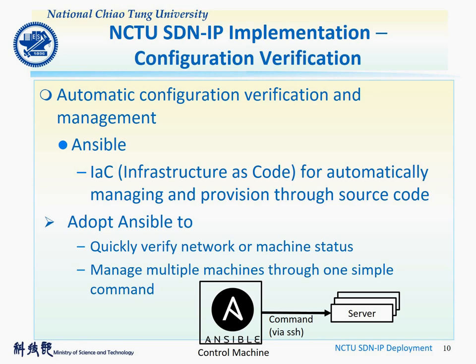The second part is our automatic configuring, verification, and management. In this part, we adopt Ansible, using a concept of infrastructure as code. Ansible allows us to use source code to match each equipment, so that we can check network and machine status of a large number of servers with simple commands.